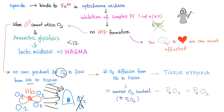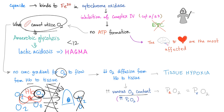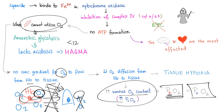But in cyanide poisoning, the tissue is not using oxygen, so there is no concentration gradient for oxygen to flow from hemoglobin to tissue. Oxygen stays on the hemoglobin, passing from artery to vein because the mitochondria cannot utilize it, destroying the gradient. Therefore, the venous oxygen content is as high as the arterial.